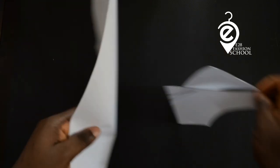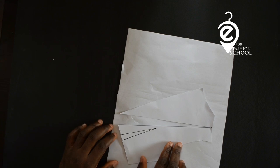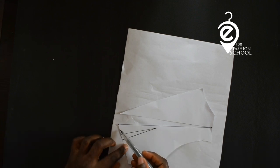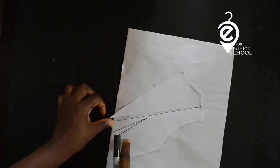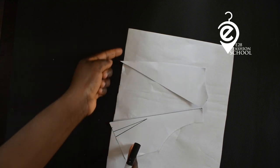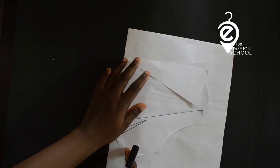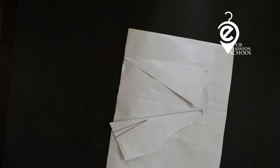Take another paper and lay that point at the edge of your paper. Remember we're trying to eliminate that dart. Move the top part of your paper until it touches the edge of the paper at the neckline like so.